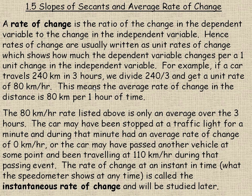For example, if a car traveled 240 kilometers in 3 hours, we would divide 240 by 3 and get a unit rate of 80 kilometers per hour. This means the average rate of change—the car went 80 kilometers per one hour of time.